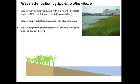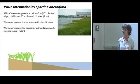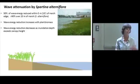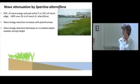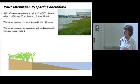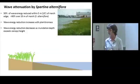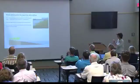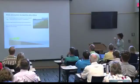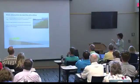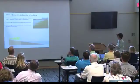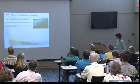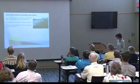Research clearly demonstrates that wave energy reduction increases with plant biomass — as you increase aboveground biomass, you increase wave energy reduction. However, the relationship between plant canopy height and tide matters. At low tide, water is at the base of the plant, and waves can scour the beach in front of the marsh. As the tide rises into the marsh canopy, wave attenuation is most effective.